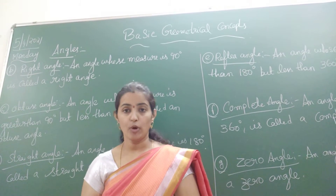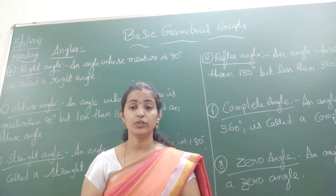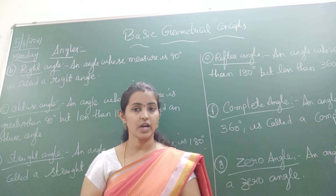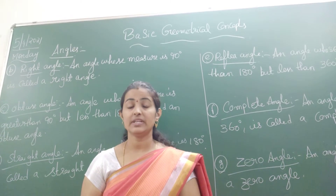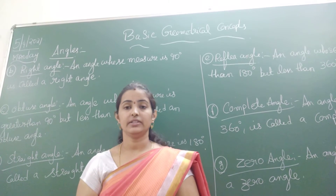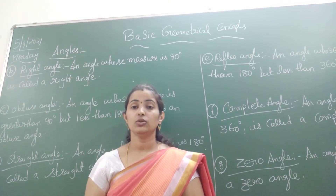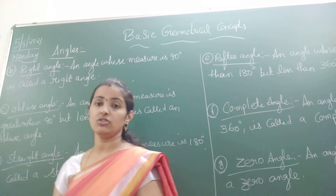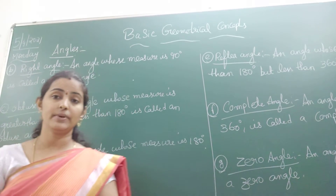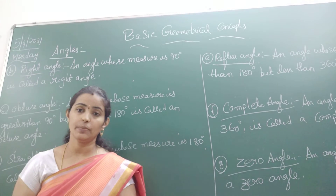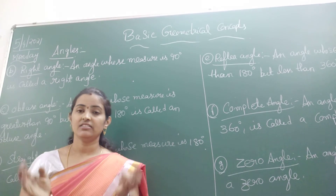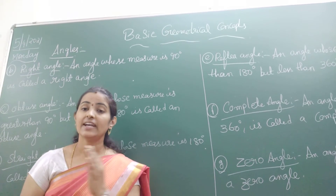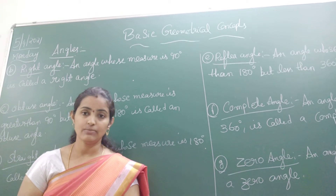We have seen the definitions of a point. What do you mean by a point? A point which doesn't have any shape — it is a fixed one. Coming to the line segment, we have seen the definition of a line segment. What do you mean by a line segment? A line segment which has a starting point and an ending point.